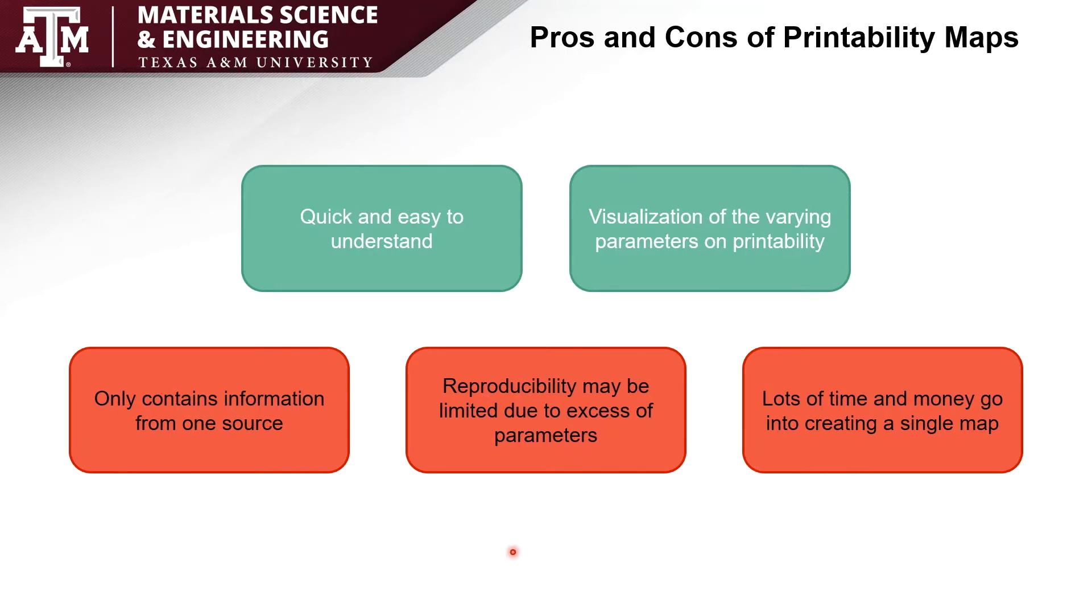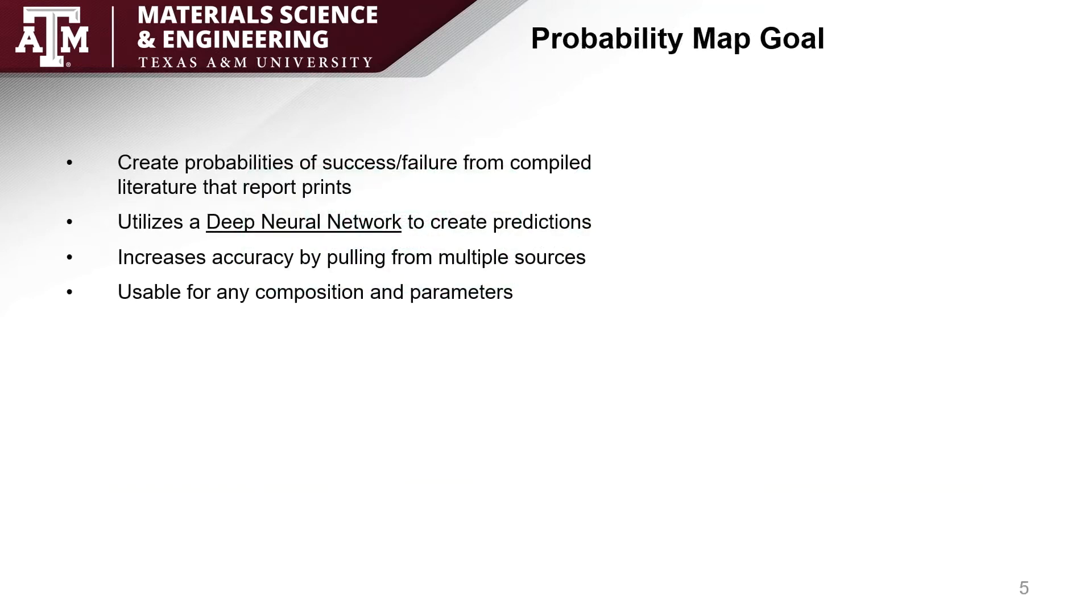So what can we do about these problems? The idea of my project is to be able to create a probability map that's based on a probability of successful print versus unsuccessful print from compiled literature that reports a successful or unsuccessful print.